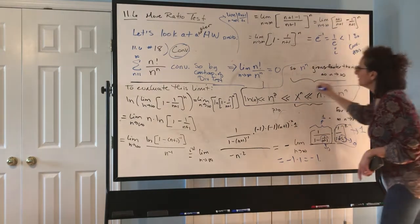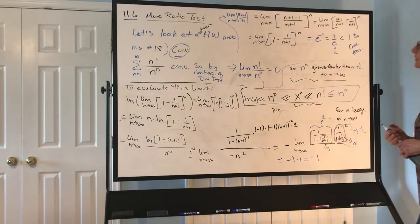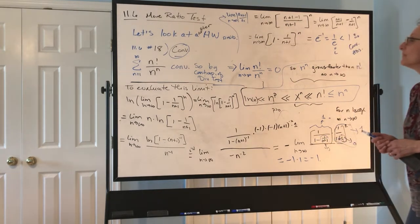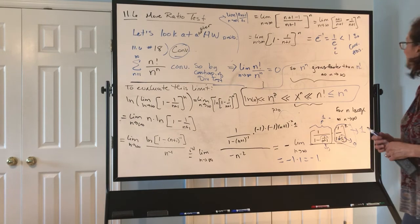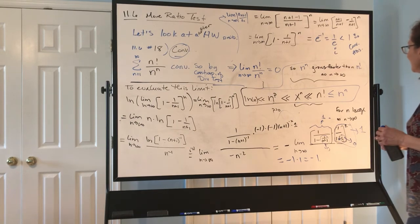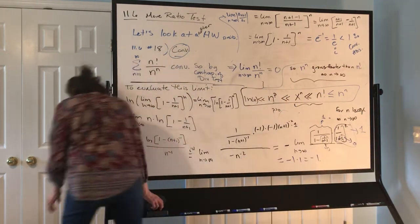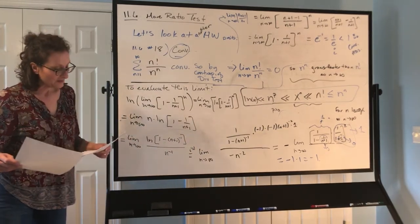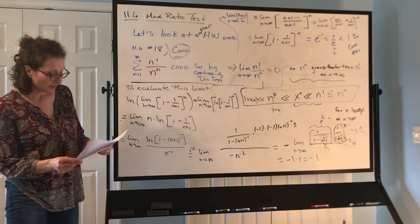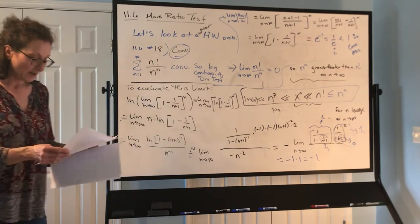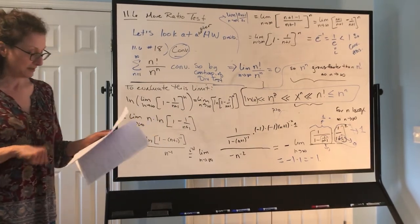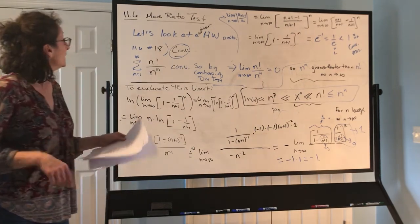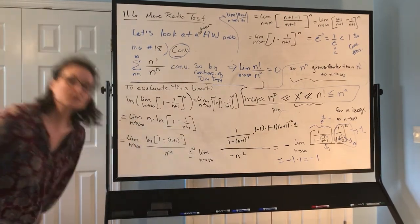We can add another entry to our dominance hierarchy: n^n dominates n factorial. And n factorial already dominated exponentials, which got us into this online teaching situation in the first place — kind of scary and cool at the same time. I think I'll bring this to a close and do a separate final 11.6 video covering the ratio test proof and fun with factorials. See you soon. Bye!